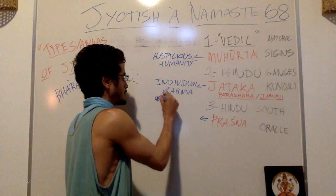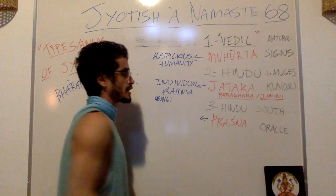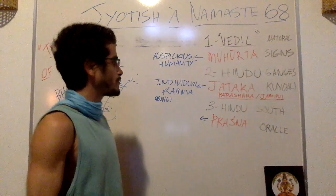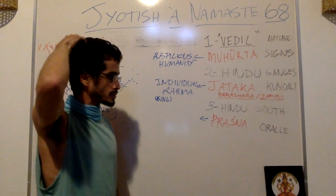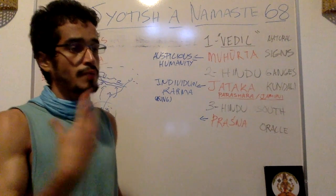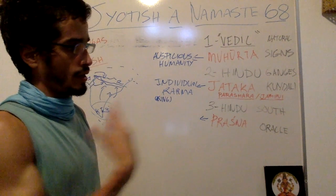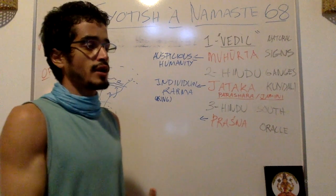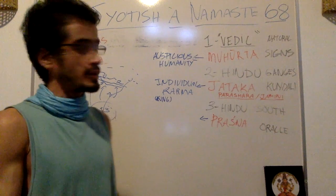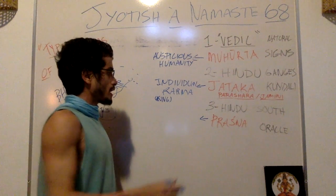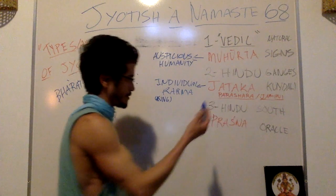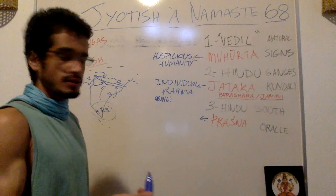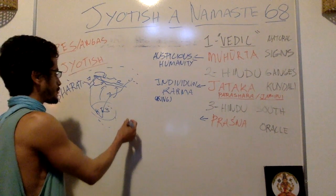So Jyataka was essentially the intelligence — like the CIA — of old kingdoms, to understand how to manage the kingdom and predict things to come. We also have a different branch of Jyotish called Prashna, and this Prashna came more from the South.